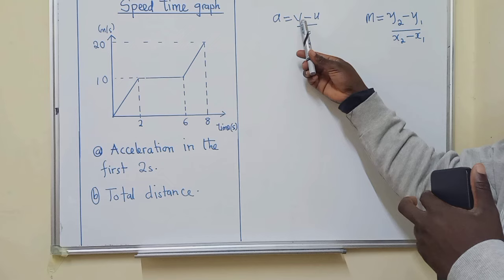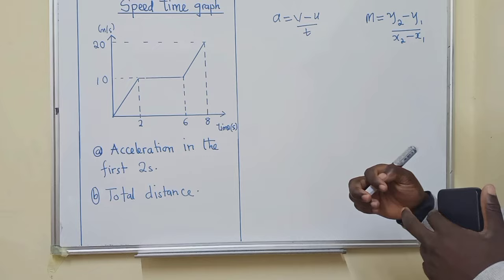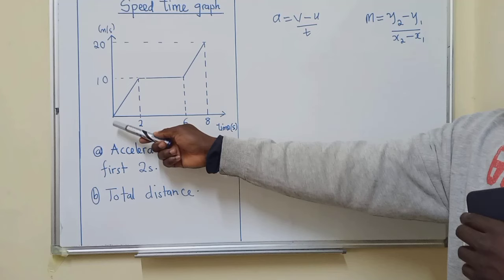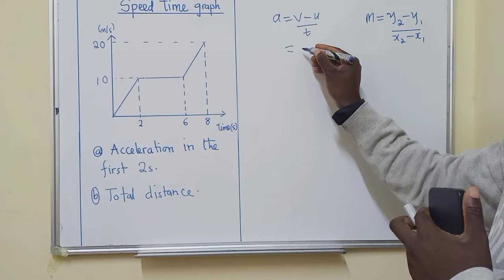You can pick whichever you wish to work with. So let me go with this one and then I'll come to this one. For this one you need to identify your final velocity, initial velocity, and the time, which in the question they have said two seconds. So if you check nicely here, this is zero going up to here. So the final velocity is 10. So we'll just say 10 minus 0, the initial velocity here is zero.